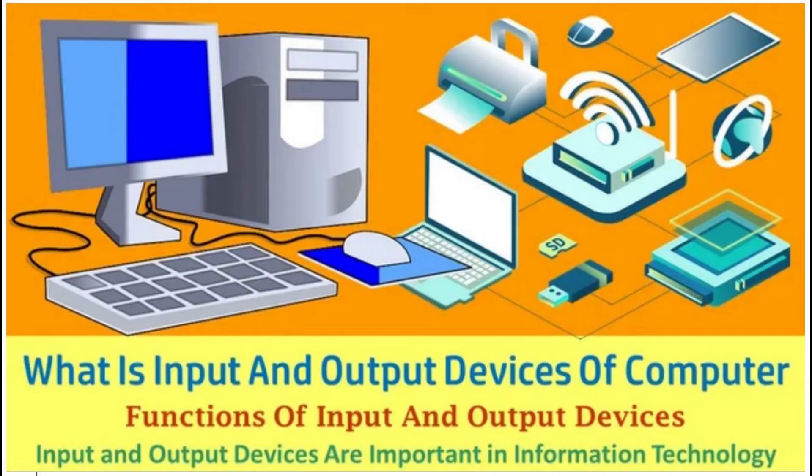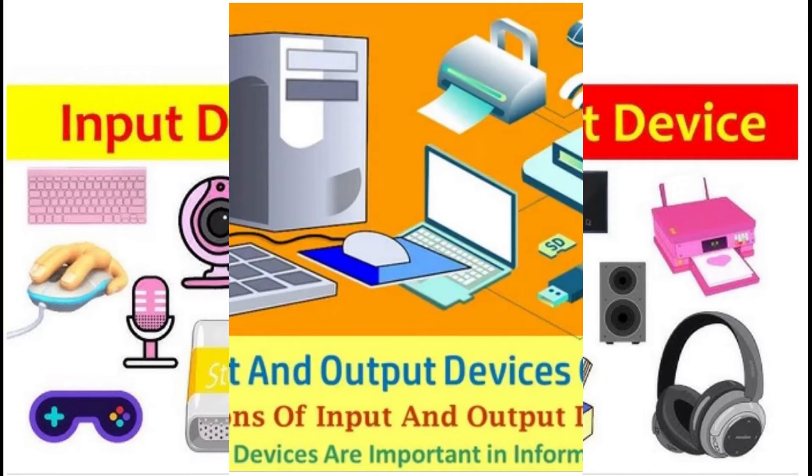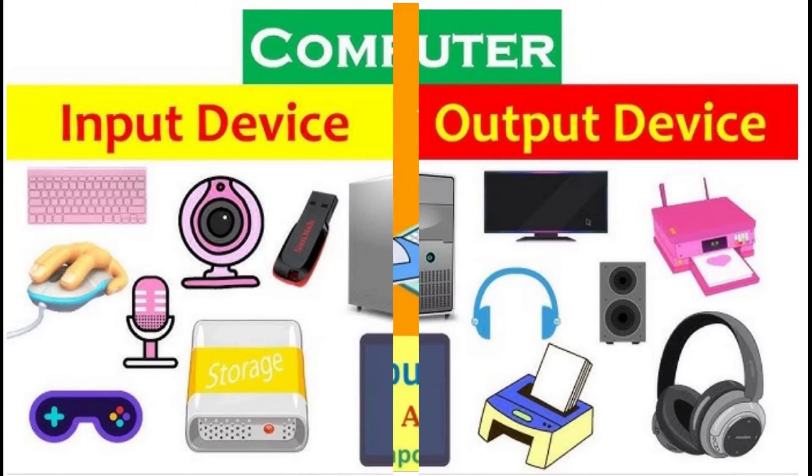The keys on the keyboard are as follows. 1. Typing keys: These keys include the letter keys, A-Z, and digit keys, 0-9, which generally give the same layout as that of typewriters. 2. Numeric keypad: It is used to enter the numeric data or cursor movement. Generally, it consists of a set of 17 keys that are laid out in the same configuration used by most adding machines and calculators.